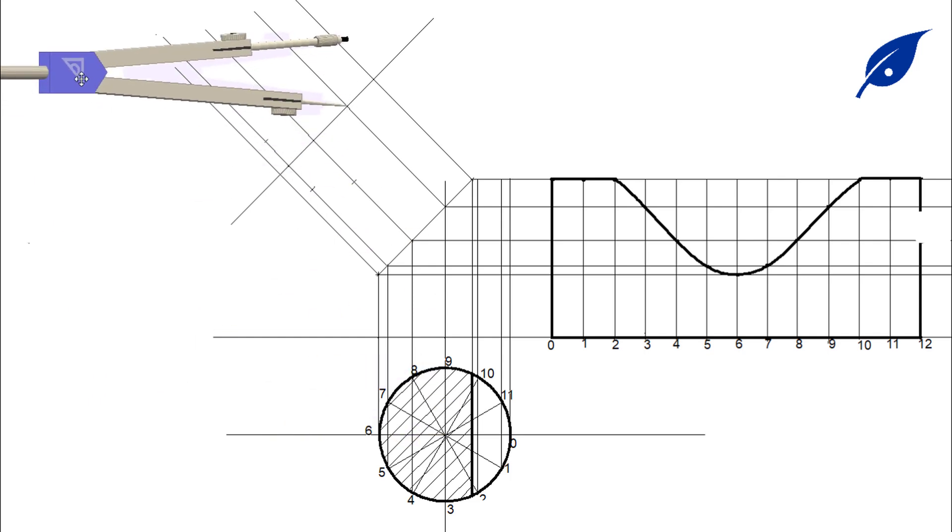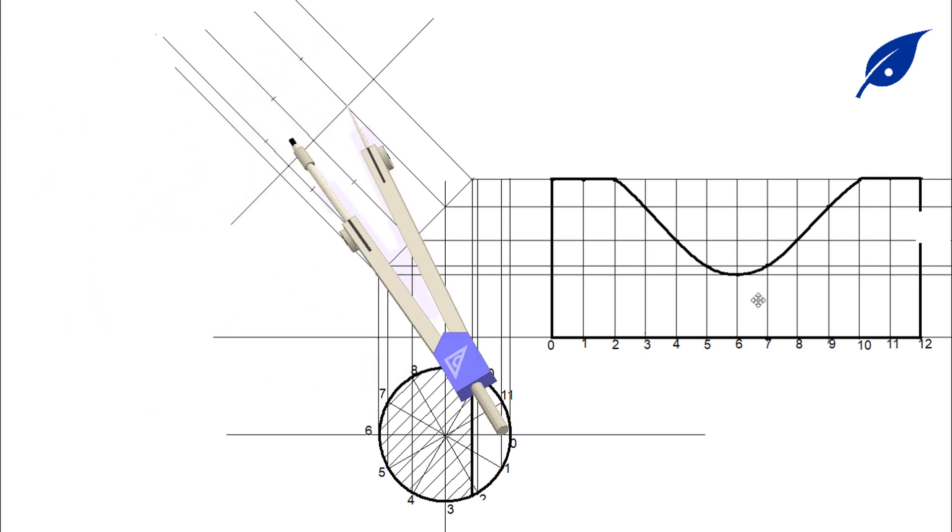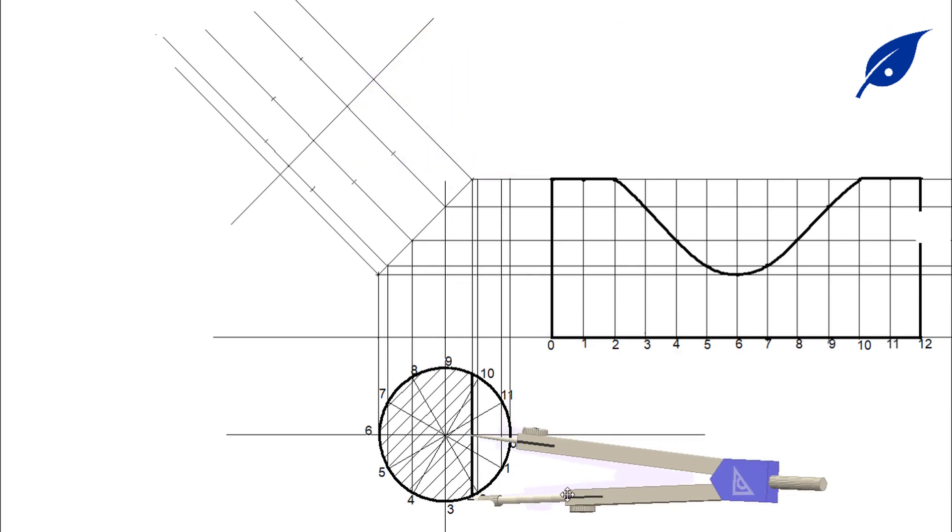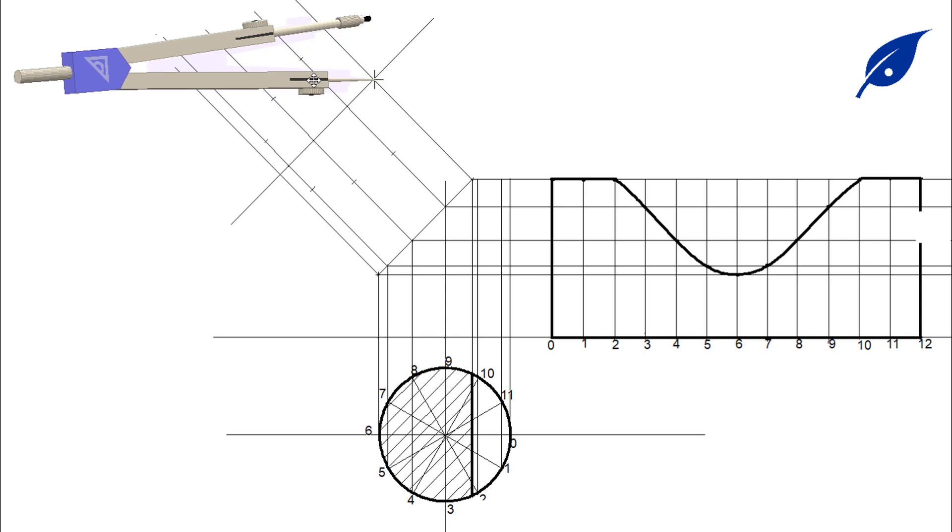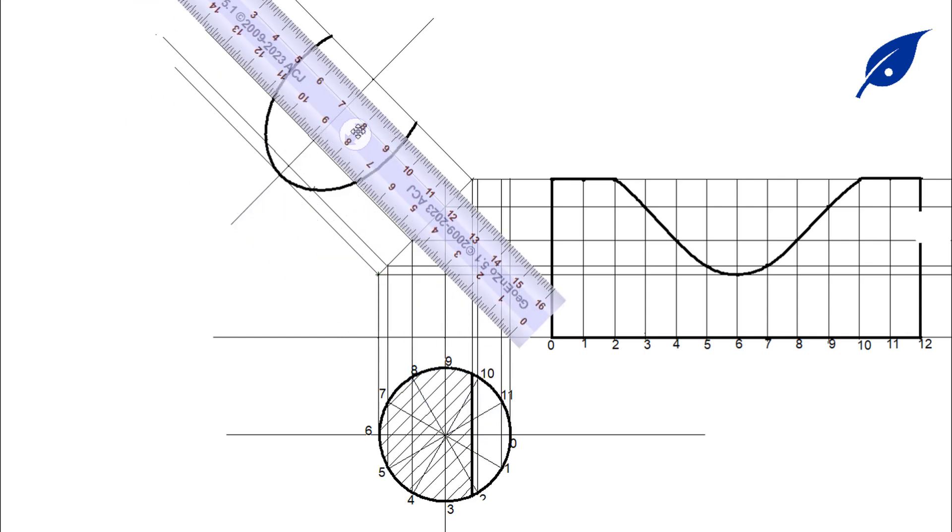This will give us the actual or the true view of the shape. After transferring this length, we connect the curves and it will give us the required view of our true shape.